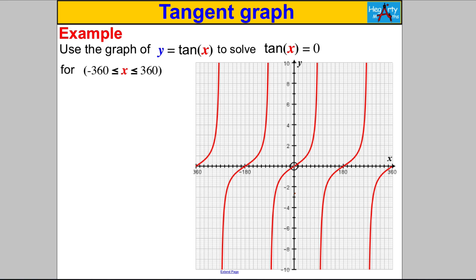Use the tan graph to solve tan(x) equals 0. Pause the video and have a think. Well, we're going to draw the line y equals 0 here and we're going to have solutions here, here, here, here, here, and here. So the x values that give you that: x is going to be -360, x is going to be -180, x is going to equal 0, x is going to equal positive 180, and x is going to equal 360.